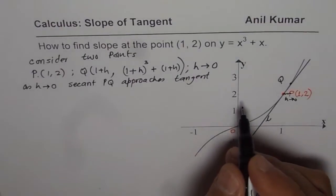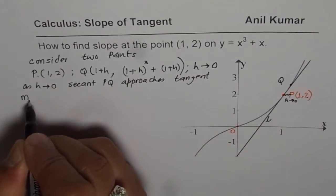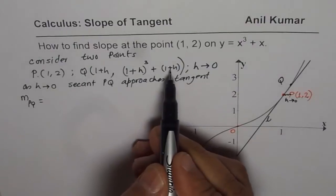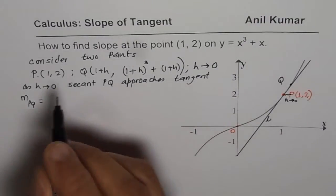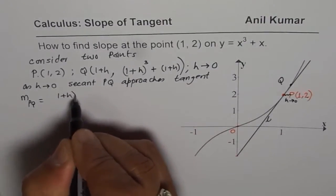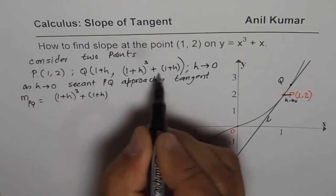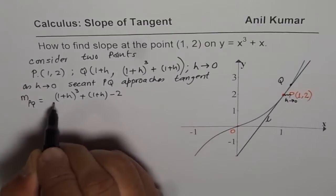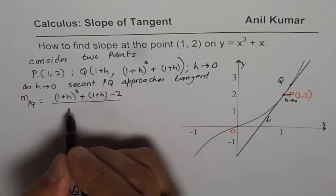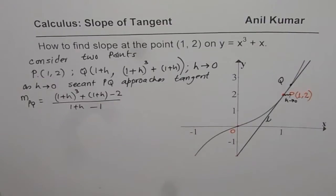This method is also called the difference quotient. We can say the slope of PQ equals the difference in y values — which is (1 plus h) cubed plus (1 plus h) minus the y value 2 — divided by the difference in x values, which is (1 plus h) minus 1. That is how you get the slope.